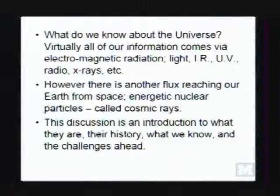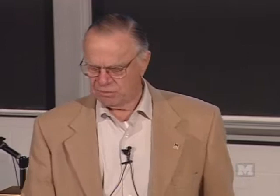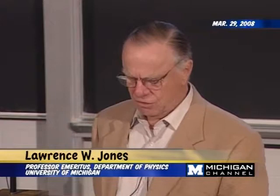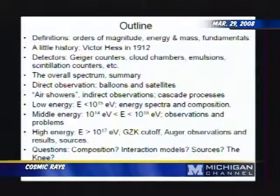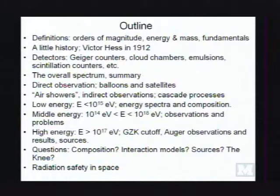Okay, cosmic rays. All of our information about the universe comes in the form of electromagnetic radiation — light, infrared, ultraviolet, radio signals, x-rays, and so on. But there is another flux reaching our Earth from space: energetic nuclear particles called cosmic rays. I'd like to start with some simple definitions, discuss the history and discovery of cosmic rays, talk about detectors, and then break the cosmic ray spectrum into three energy regions — low, middle, and very high energy. In the latter part, I'll be using information from very recent experiments of the Auger collaboration.